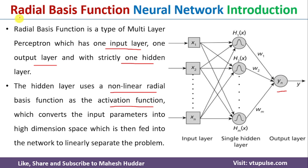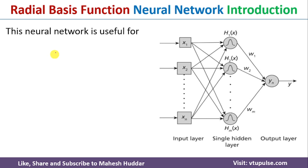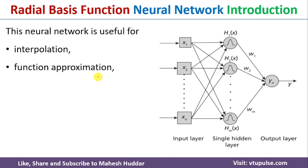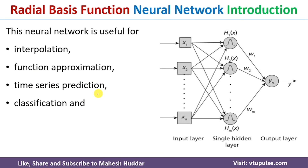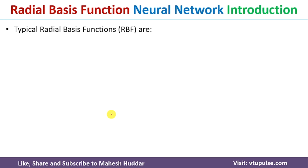Once the data is converted into linear data, it will be classified with the help of the output layer neuron. This is the main idea behind radial basis function in artificial neural network. The radial basis function is used in interpolation, function approximation, time series prediction, classification tasks, as well as system control.